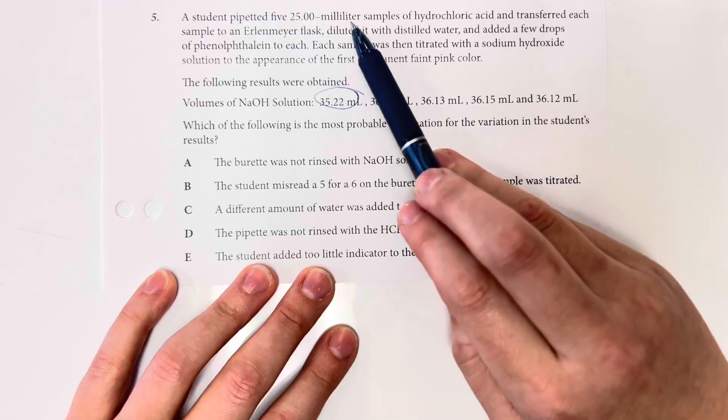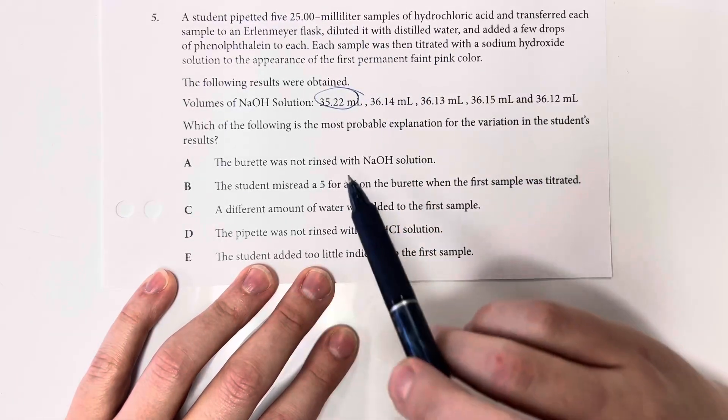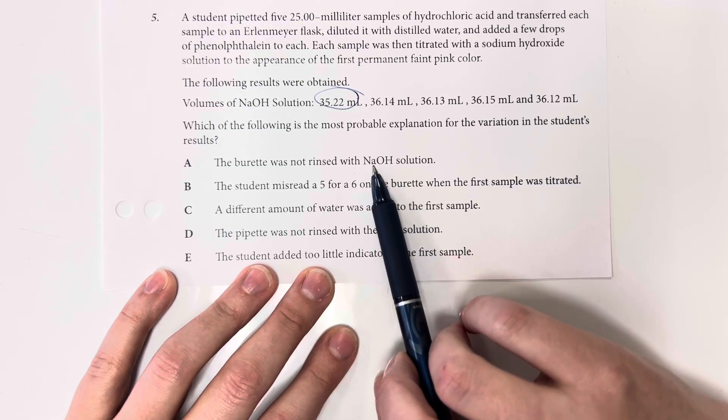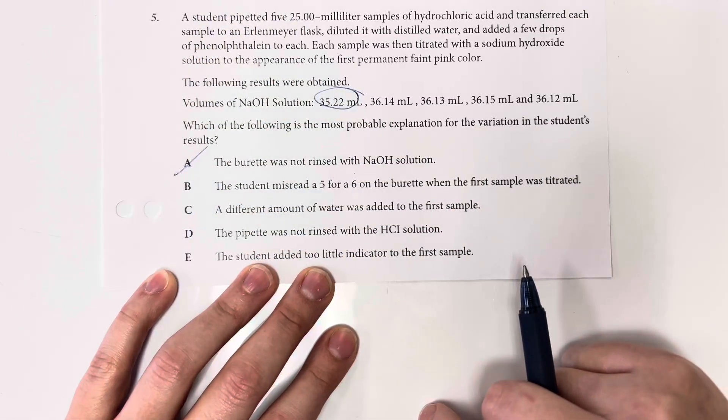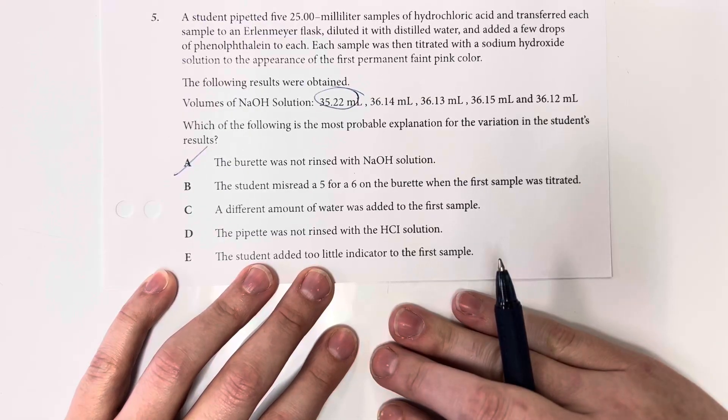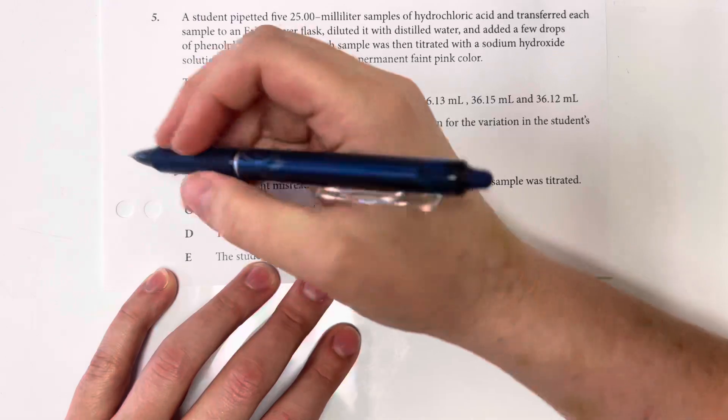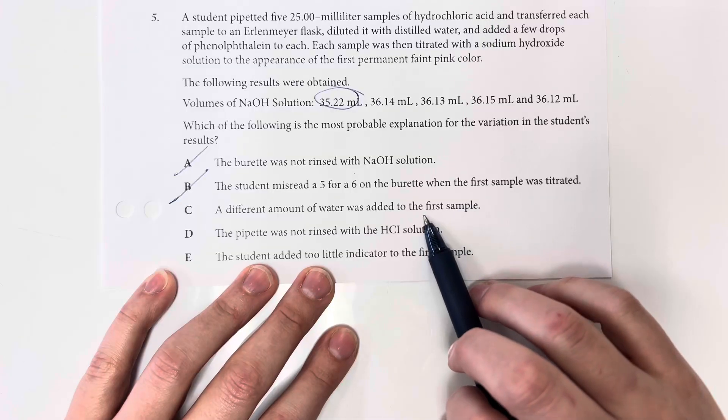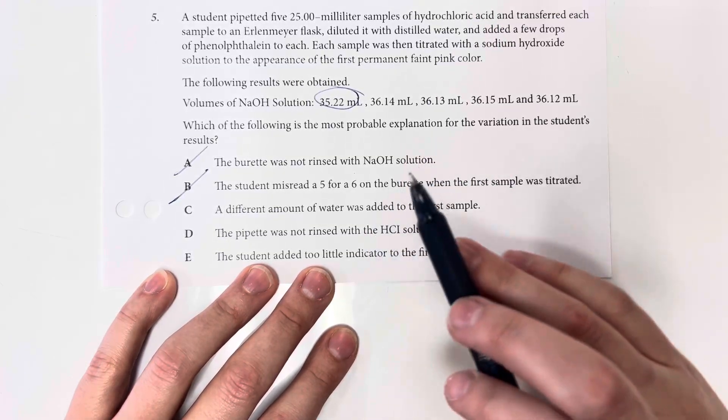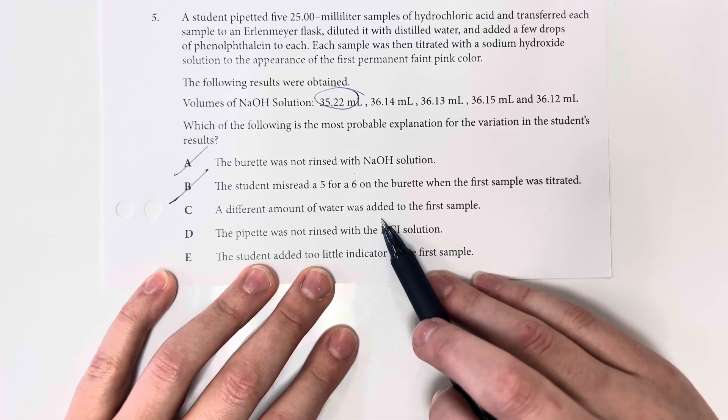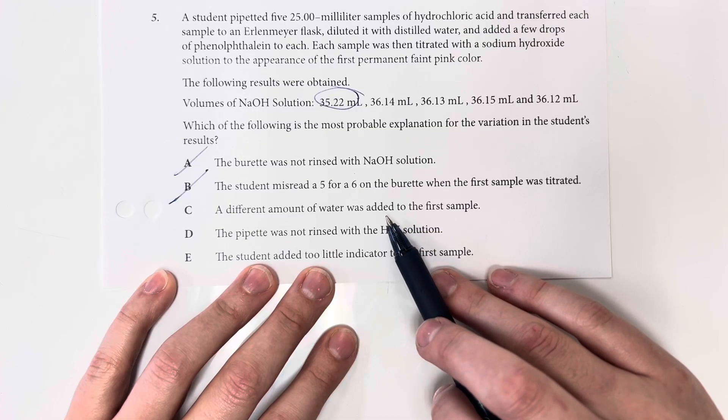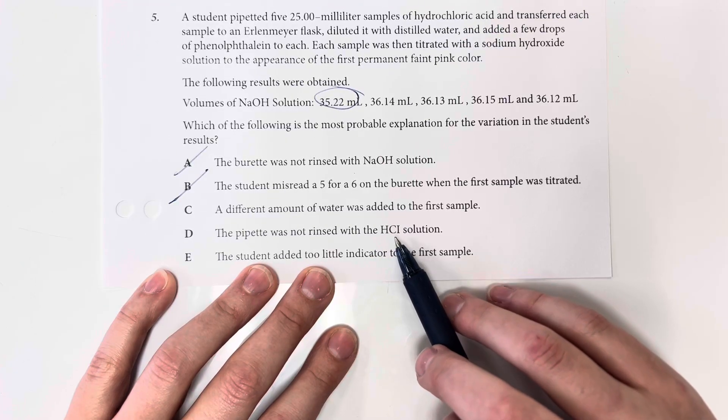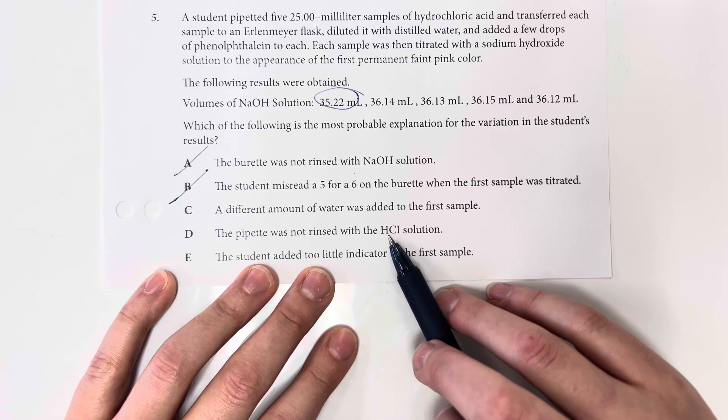So the burette was not washed with sodium hydroxide. That would explain why I would have more, not less, because that would have lowered the concentration of the sodium hydroxide. Student misread five for a six on the burette for the first sample when it was titrated. That still wouldn't have gotten it in line with all of the rest of the sample. A different amount of water was added to the first sample. It doesn't say more or less, and that's just not a great solution. We need it to be that it is a lower concentration of hydrochloric acid here, so lower moles. Pipet was not rinsed with hydrochloric acid.